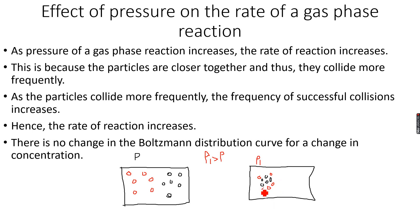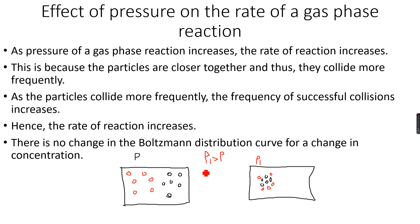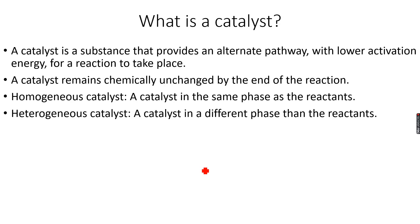As the frequency of collisions increases at higher pressure, there will be more successful collisions, so as the pressure of a gas-phase reaction increases, the rate of reaction increases. Just like concentration, there is no change in the Boltzmann distribution curve for a change in pressure because there is no change in the energy of the particles. As pressure increases, the particles are pushed closer together, they collide more frequently and more successfully, and as a result the rate of reaction increases. Now, before we talk about the effect of a catalyst on the rate of a reaction, we need to know what...